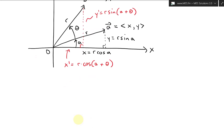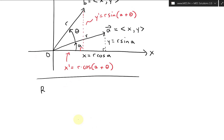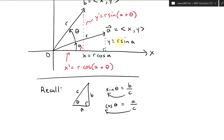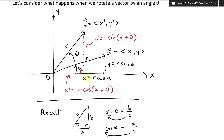Just to recall the basic trigonometric definitions: if we have a triangle with adjacent side a, opposite side b, hypotenuse c, and angle theta, then sine is defined as opposite over hypotenuse, so b = c·sine(theta), or in our case r·sine(a). Likewise, cosine(theta) equals adjacent over hypotenuse, giving us r·cosine(a).